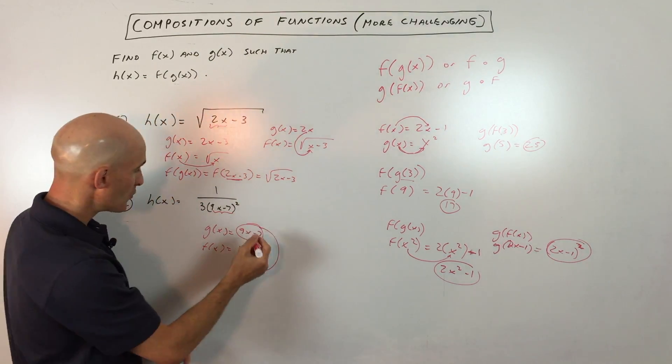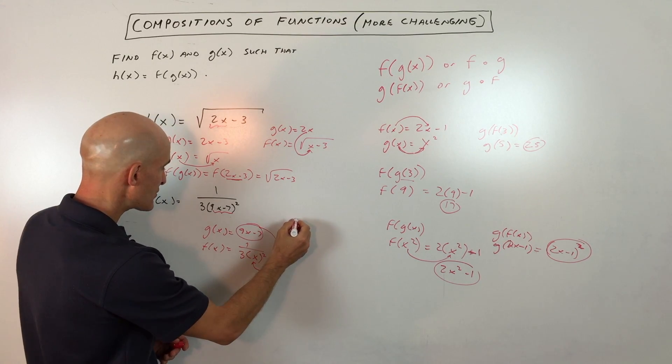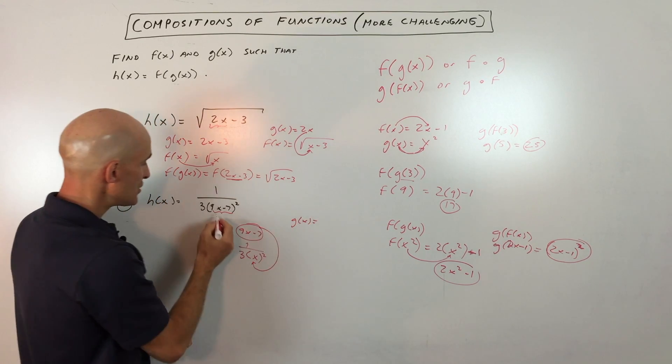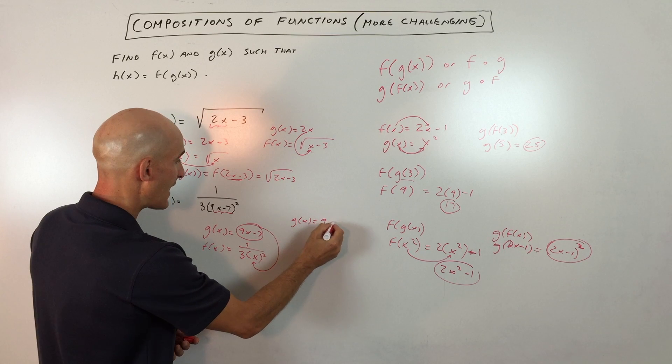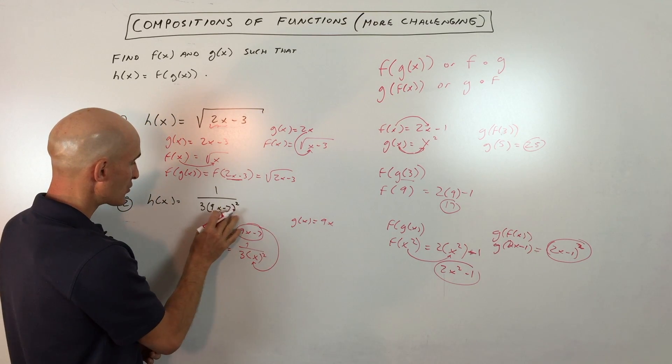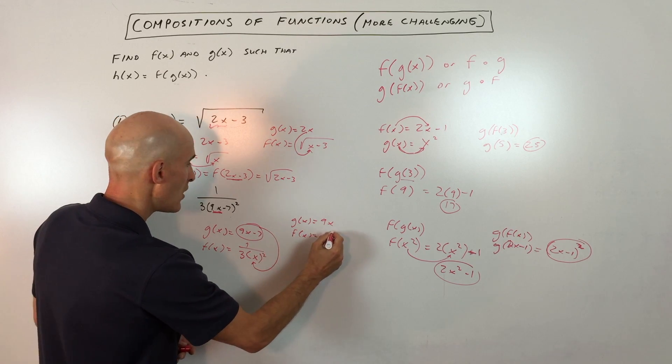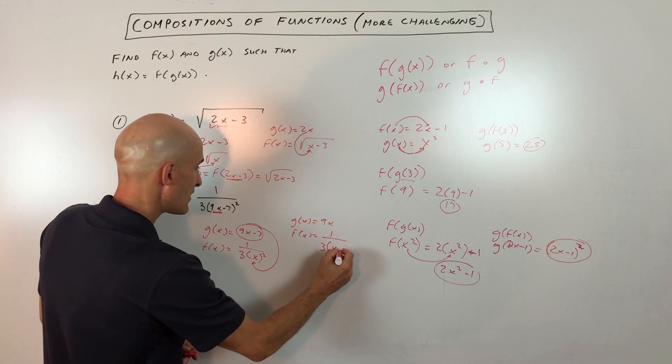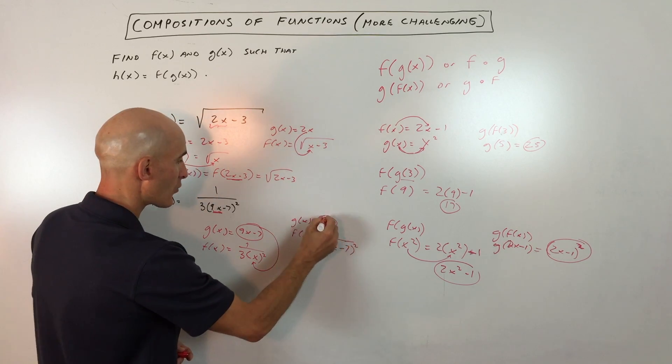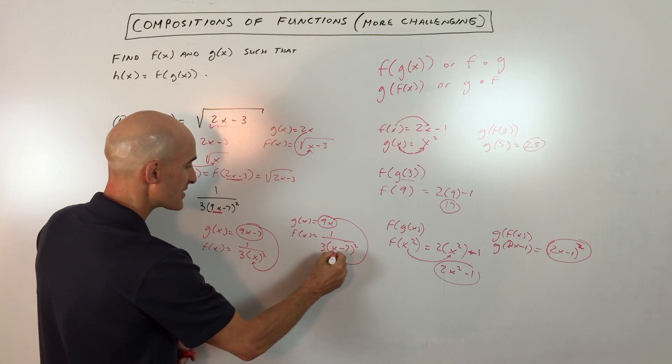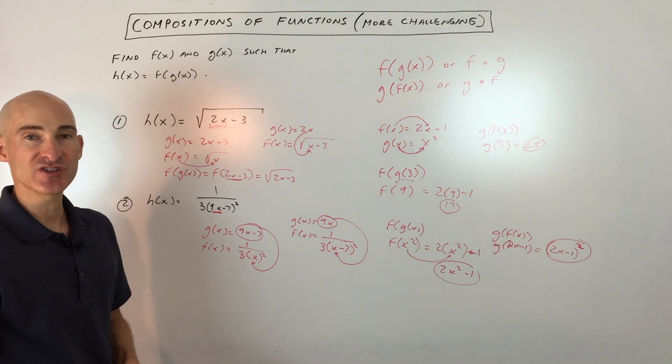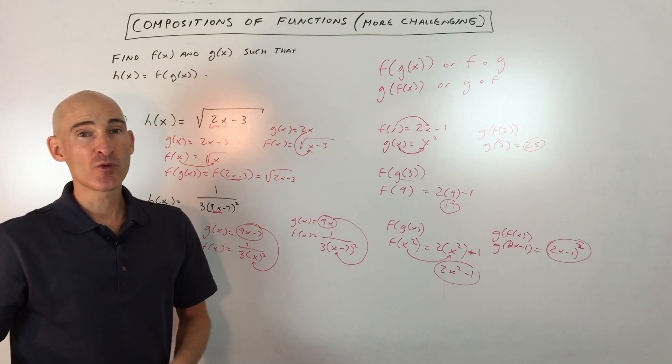That's not the only way to do it - there are a lot of options, but let's do one more. You could say g(x) = 9x, so now we're just working with this piece, and f(x) = (1/3)(x - 7)². Now we're putting 9x in place of x when we do that composition.